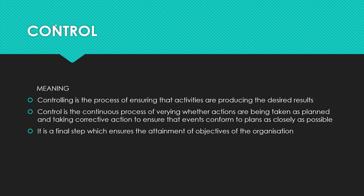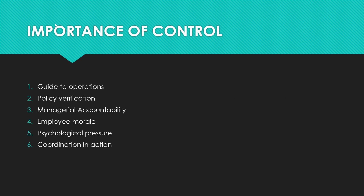Now we can study the importance of control. First: guide to operations — control guides the organization, keeps it on the right track, measures progress, reveals deviations, and indicates corrective actions. Second: policy verification — control helps the organization to verify the quality of its various policies, and helps to review, revise, and update plans and policies. Third: managerial accountability — when a manager assigns activities and delegates authority to subordinates, he becomes accountable for all the ultimate performance.